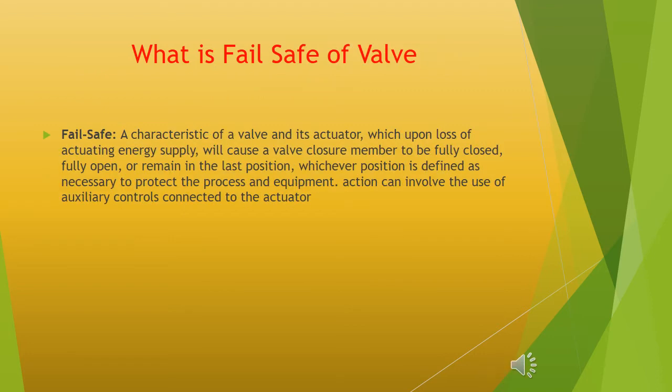What is fail safe of a valve? Fail safe is a characteristic of a valve and its actuator which, upon loss of actuating energy supply, will cause a valve closure member to be fully closed, fully open, or remain in the last position — whichever position is defined as necessary to protect the process and equipment. This action can involve the use of auxiliary controls connected to the actuator.